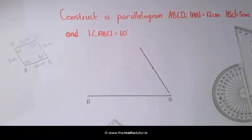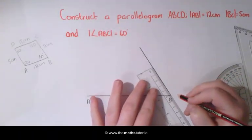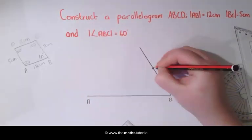This side has to be 5cm so we are going to mark off 5cm. So we know this point here is C.